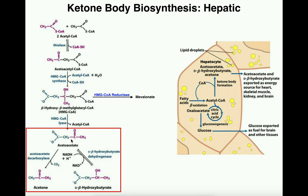There's another reaction: acetoacetate decarboxylase. The carboxyl group on the left side of the molecule is removed as CO2 in a simple decarboxylation, giving us acetone. All three ketone bodies are dumped into the blood and go to peripheral tissues — the heart, skeletal muscle, the brain, and even the kidney — where those tissues can use them for energy production.